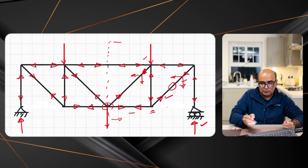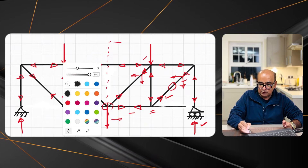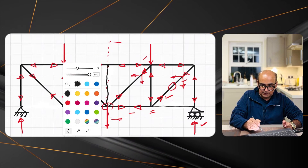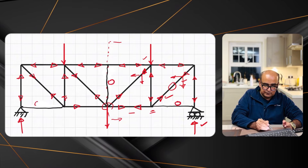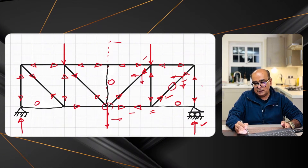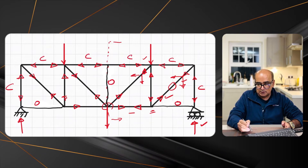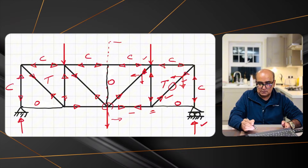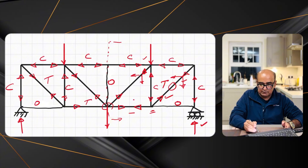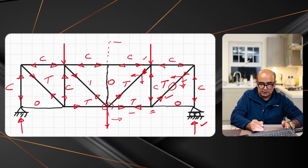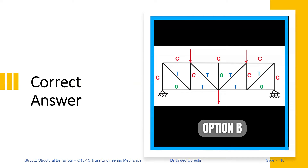Putting back the zero force members we removed earlier: we had one member here, another here, and one more — all zero force. The outer inclined members are in compression; the top chord members are in compression. The bottom chord members are in tension. The vertical members are in compression, and the remaining bottom members are in tension. The correct answer to the first question is Option B.